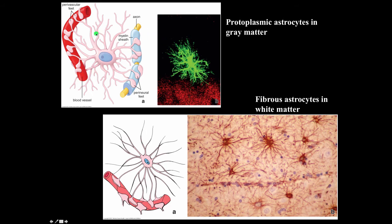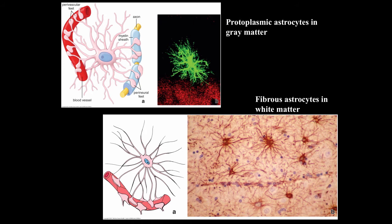In both cases, these astrocytes are putting out foot processes onto the blood vessels. There are huge numbers of these foot processes that essentially totally surround the blood vessels, and these give rise to the blood-brain barrier both in gray matter and in white matter. So astrocytes are very important in giving rise to the blood-brain barrier.